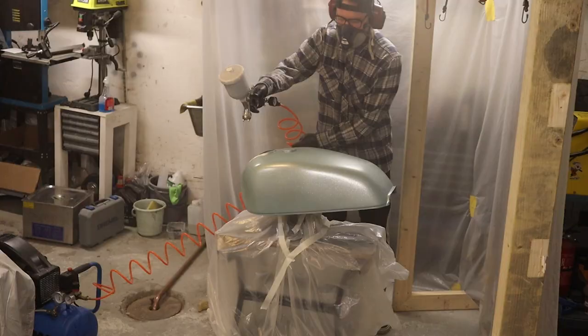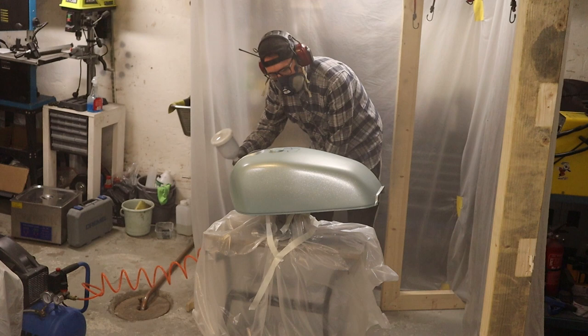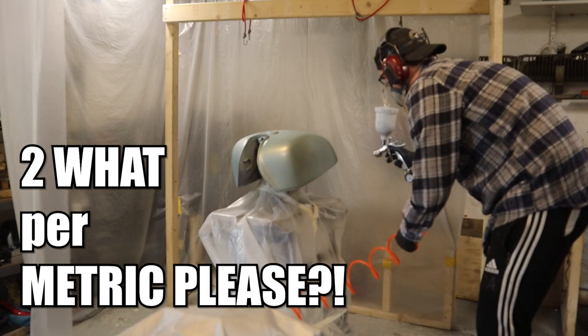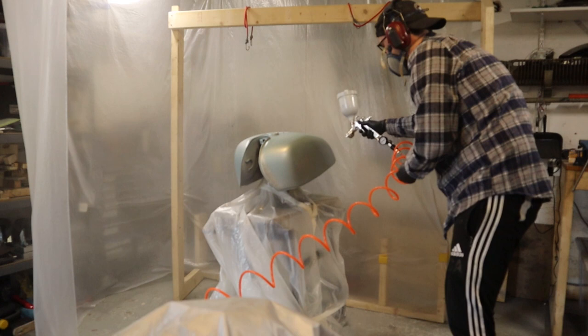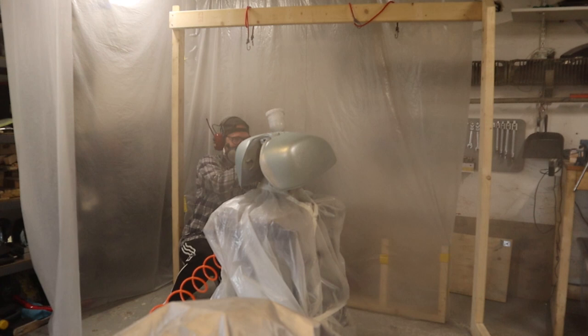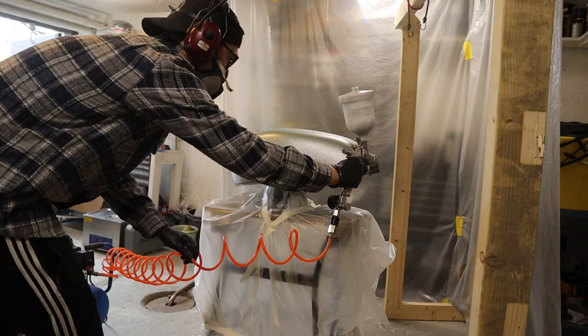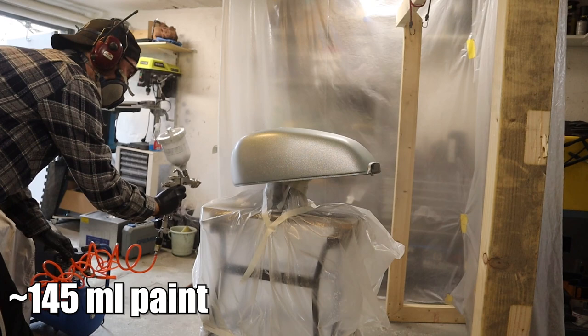This was an annoying subject to learn about. Much of the information out there is put out by experienced painters that have a good feel for how much flake they should add, so much of the information is very general. For example, two heaping spoons per quart. What does that even mean? The ratio was super important for me as well. Since I'm mixing up such a small batch, my tolerances are less than if I were to, for example, paint an entire car.